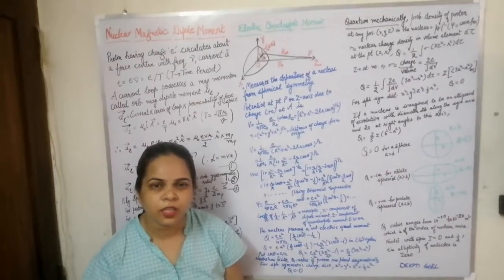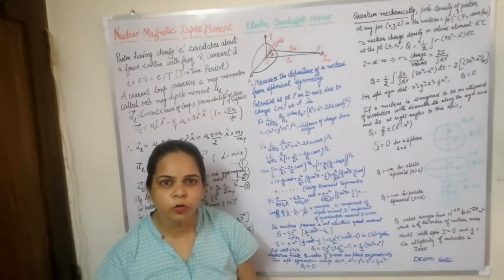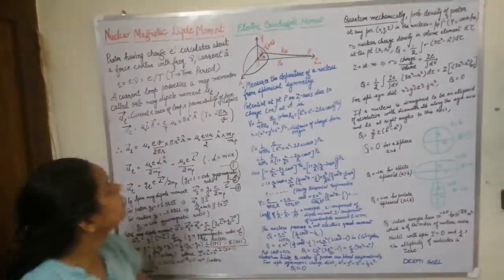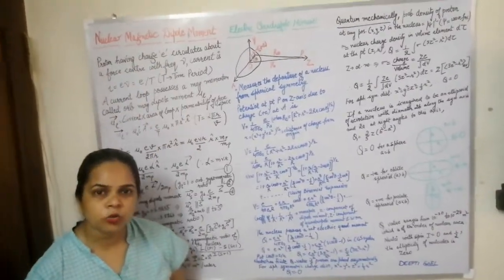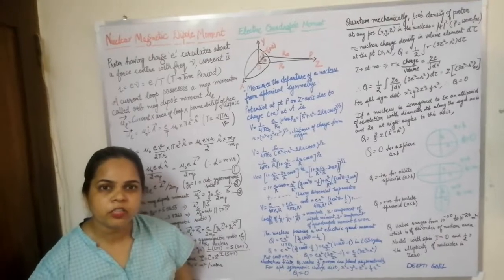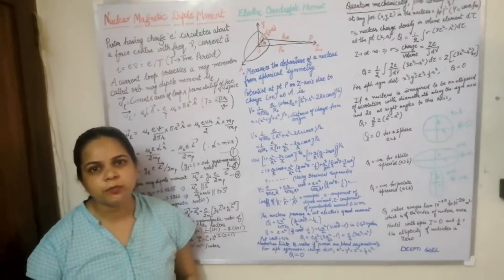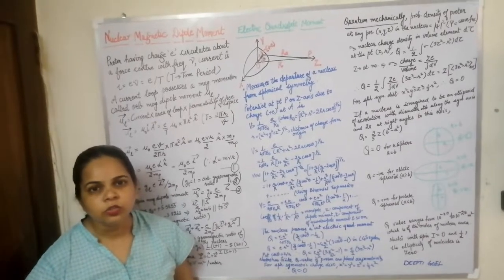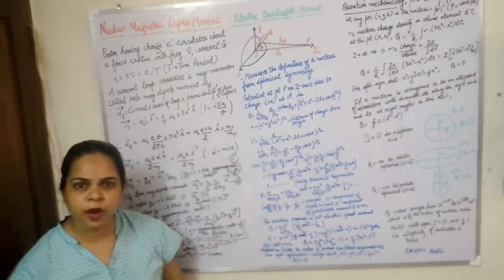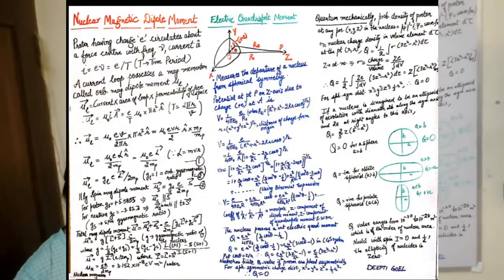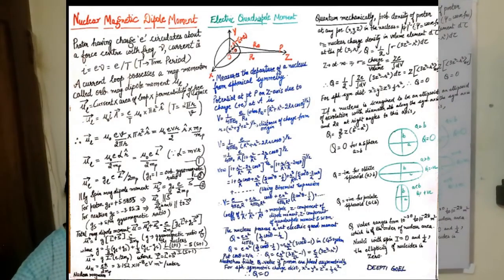Hello students, now we are going to discuss another property of the atomic nucleus — the nuclear magnetic dipole moment. As you all know, when a charged particle moves in a closed path it produces a magnetic field. Since the proton is a positively charged particle moving inside the nucleus, due to its orbital motion,